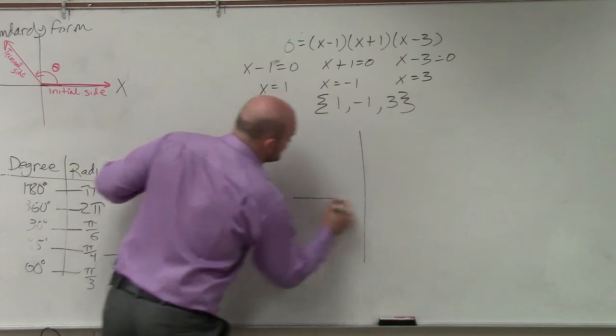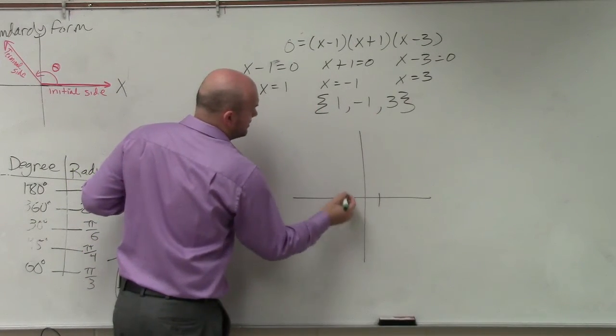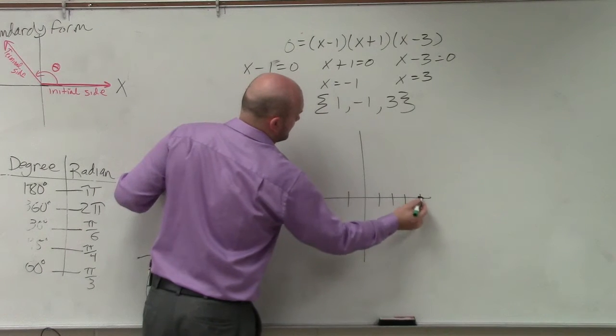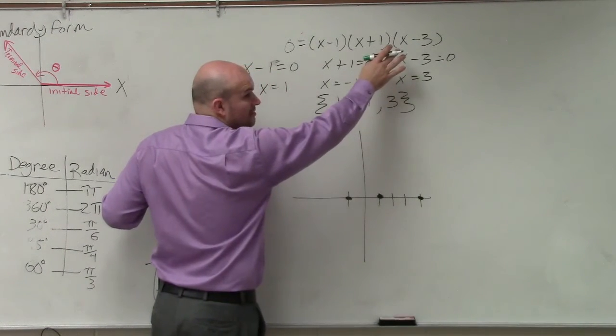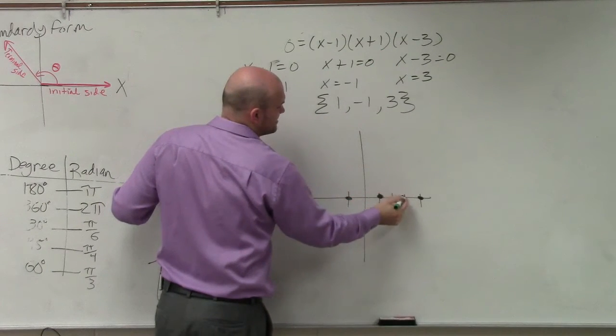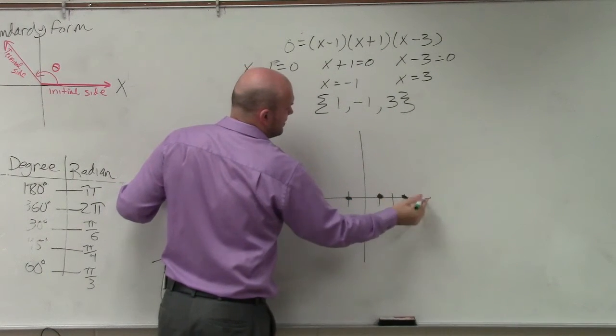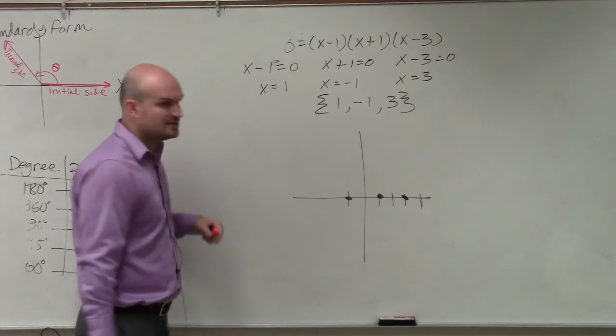So I go and graph this. I have 1, negative 1, and 3. 1, 2, 3. 4. What? That number was 4? Oh, 1, 2, 3. Yes, thank you. OK, does everybody follow me with that?